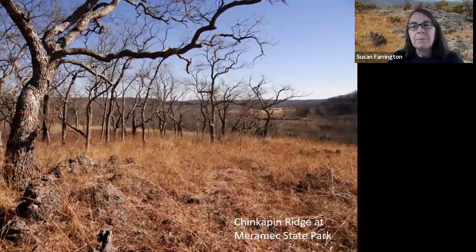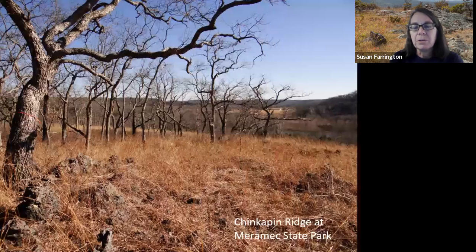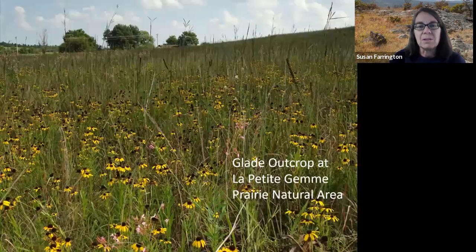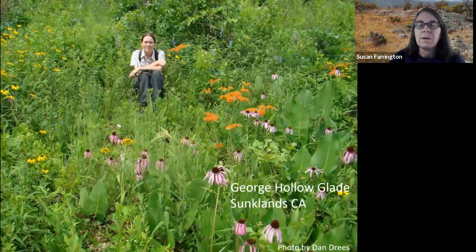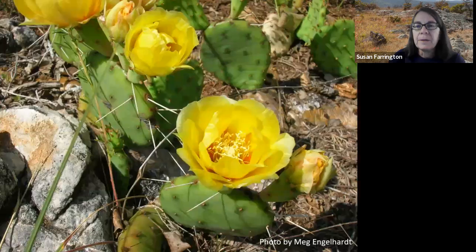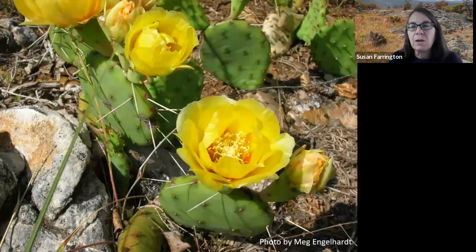Although glades are dominated by grasses and wildflowers, scattered trees are also a natural part of the glade community. Glade outcrops even occasionally occur within a prairie, although glades are more commonly associated with woodlands. Glades feature many of the same species of grasses and wildflowers found in our prairies. But being so rocky and dry, they also feature species from the desert southwest, such as prickly pear cactus.